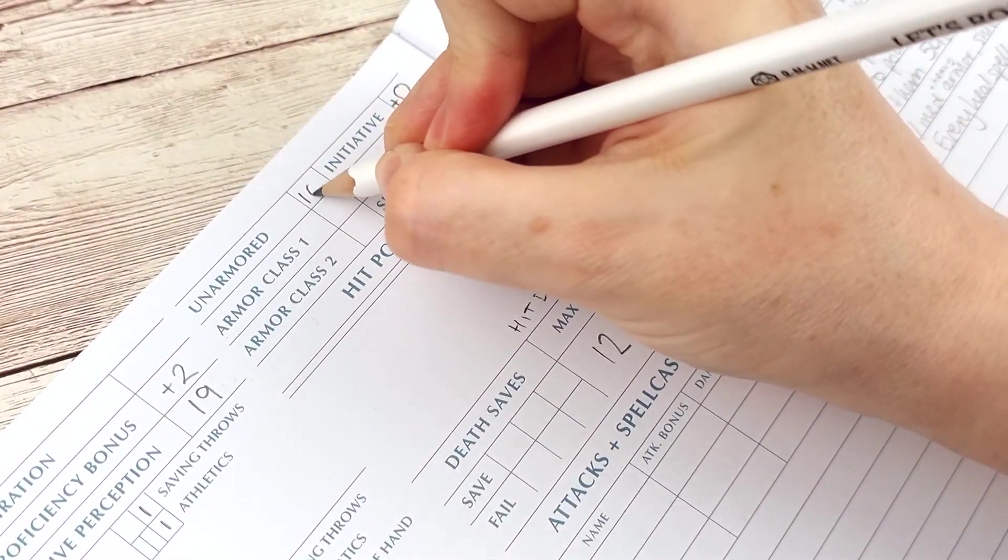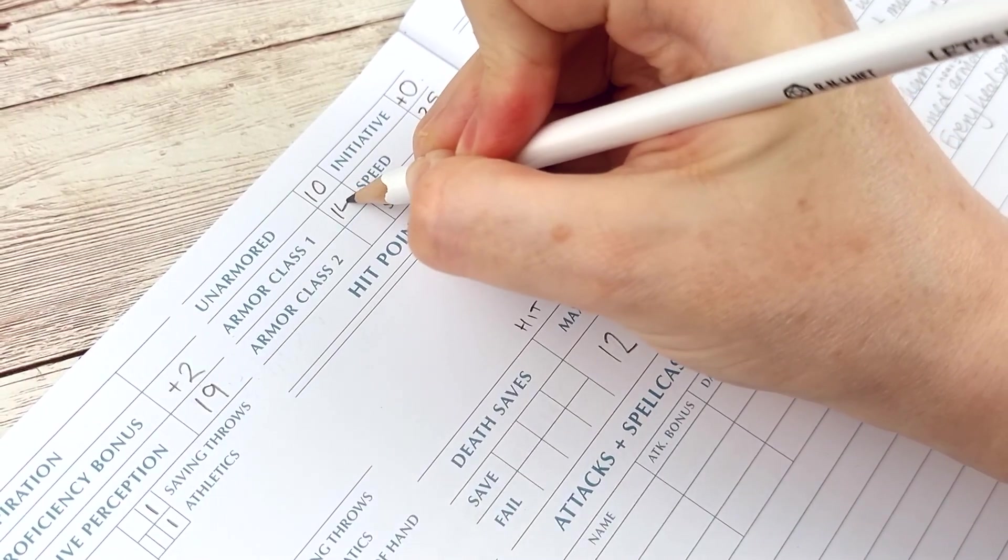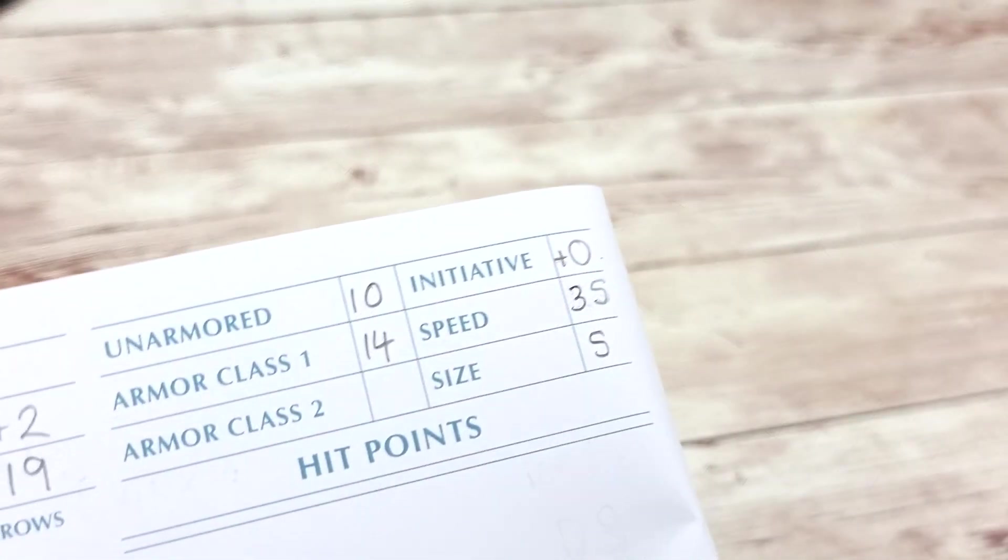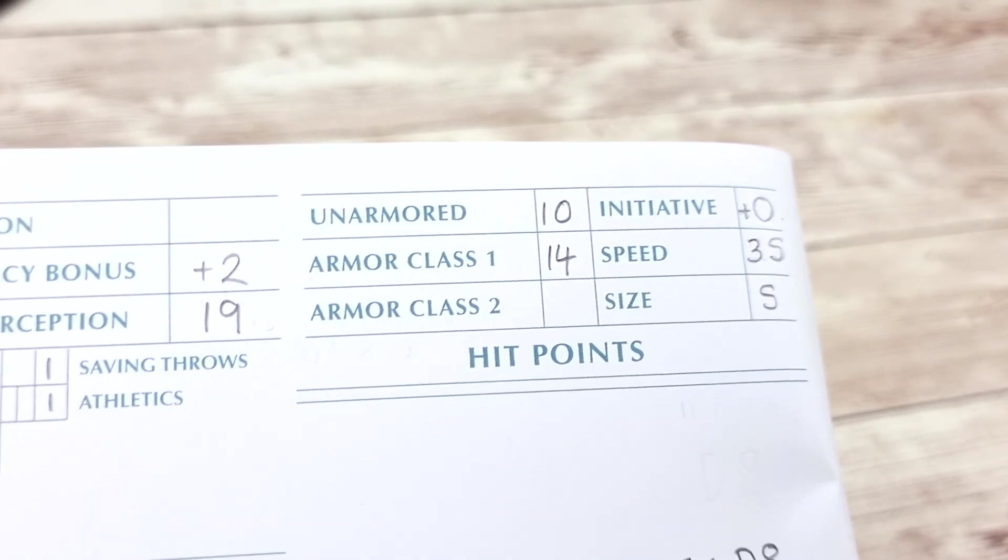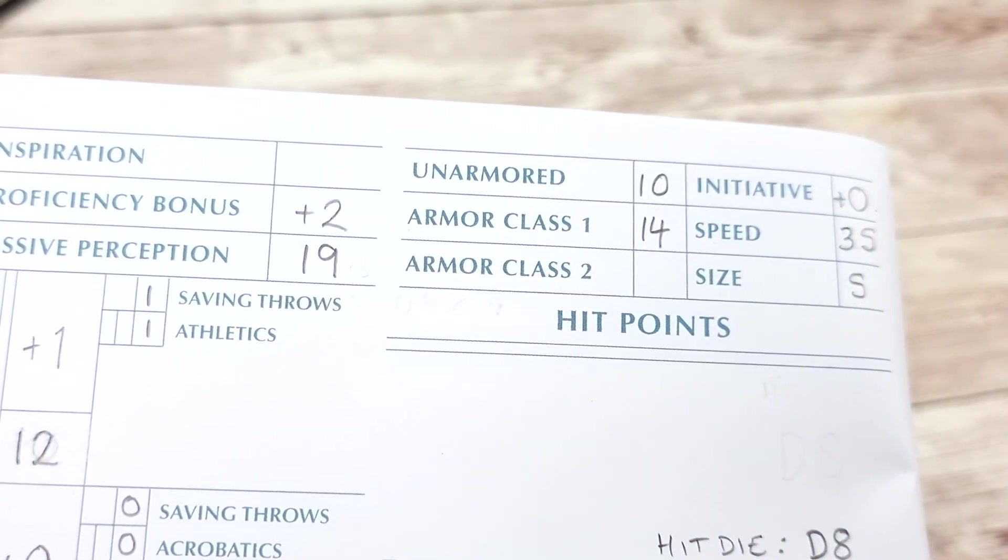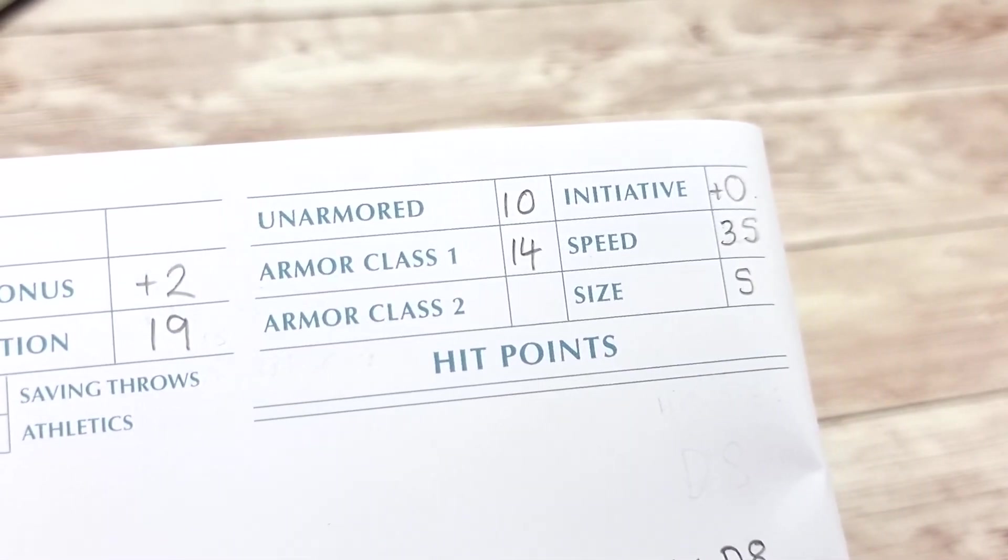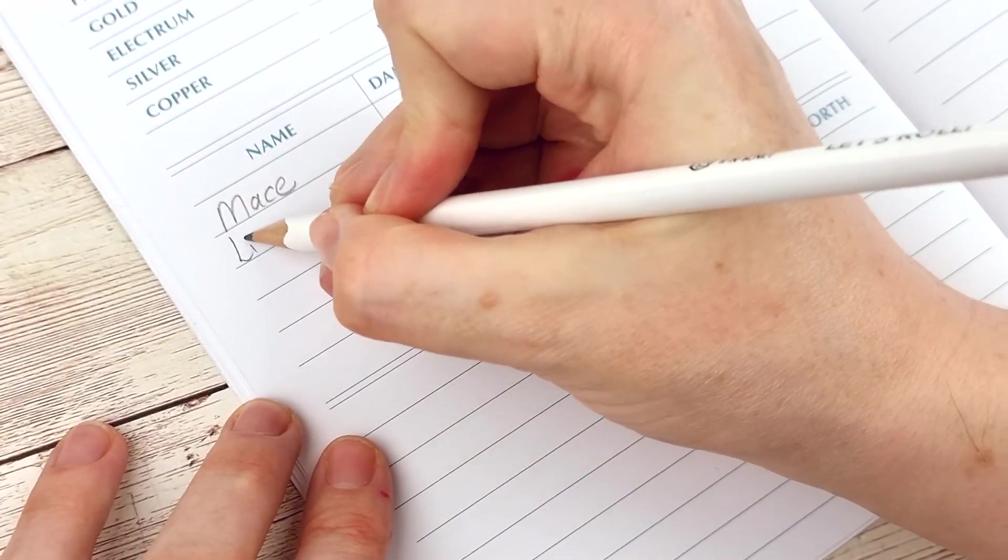This is the number that enemies need to beat when they're rolling to hit you. If you're not wearing armor this number should be ten plus your dexterity modifier. If you are wearing armor the value will change and that information can be found with the type of armor that you've chosen to wear.